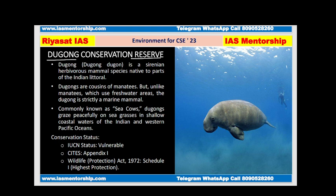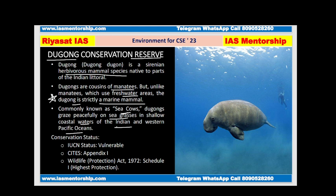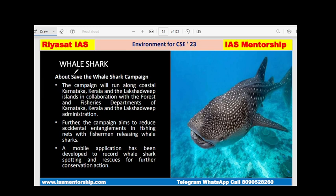Dugongs are also known as sea cows because they eat sea grasses, like cows eat grass. They are found in the shallow coastal waters of the Indian and western Pacific Oceans. They are herbivorous mammal species and cousins of manatees. Unlike manatees, which use freshwater areas, the dugong is strictly a marine mammal. Conservation status: Vulnerable, Appendix 1, and Schedule 1.